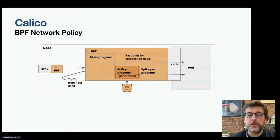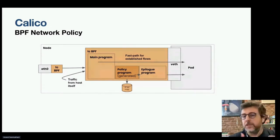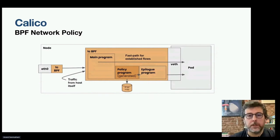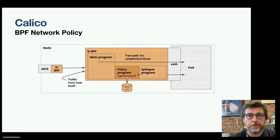These programs are chained together using BPF tail calls. We'll go from the main program — if it's an established flow, we can send it directly to the virtual Ethernet interface and into the pod. But if it's not, we can send it through the policy program to figure out exactly what we're supposed to do with that flow.